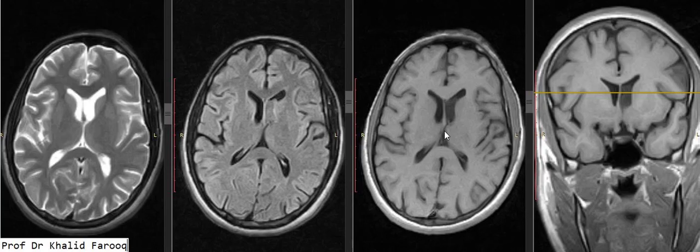In the third ventricle, we usually see colloid cysts. These are all benign lesions, but sometimes when the size of the cyst is increased, it can cause obstruction and leads to hydrocephalus.